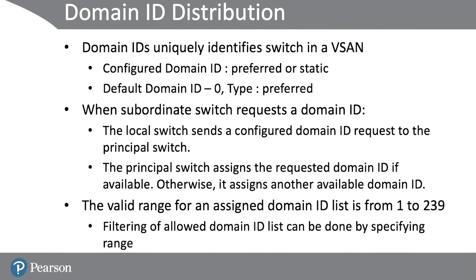The valid range of assigned domain IDs can be configured from 1 to 239, and you can also perform filtering of the allowed domain ID list by specifying a range. When the received domain ID is not within the allowed list, the requested domain ID becomes the runtime domain ID and all interfaces of that vSAN are isolated. When the assigned and requested domain IDs are the same, the preferred and static options are not relevant. If the configured domain ID type is static, the assigned domain ID is discarded and all local interfaces are isolated — the local switch assigns itself the configured domain ID, which becomes the runtime domain ID. If the configured type is preferred, the local switch accepts the domain ID assigned by the principle switch and that becomes the runtime domain ID.